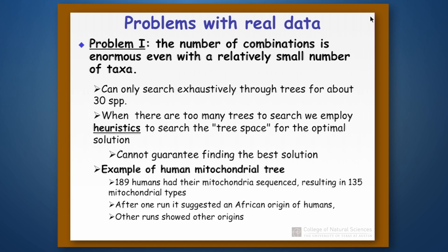Here's an example of where this was the case. There was a human mitochondrial tree done where 189 human beings had their complete mitochondria sequenced, resulting in 135 unique mitochondrial types. One run of this on a computer using a heuristic technique suggested an African origin for human beings, while other runs showed other origins. We now know the African origin is correct because more data has been collected since then, but at the time there was no way to be sure, because it was equally parsimonious with other possibilities.